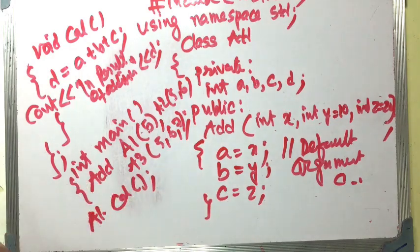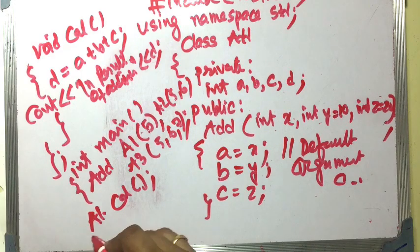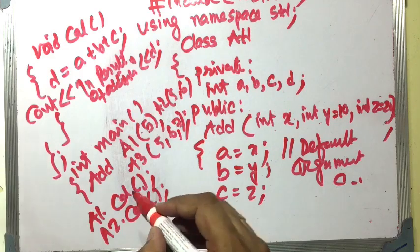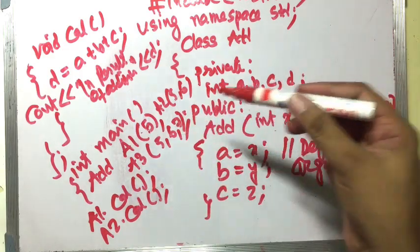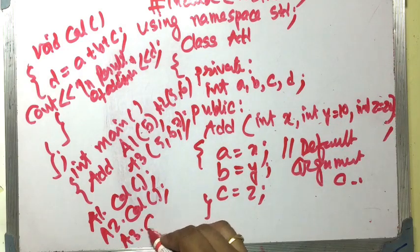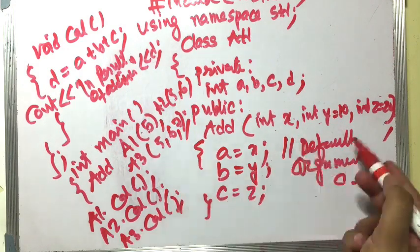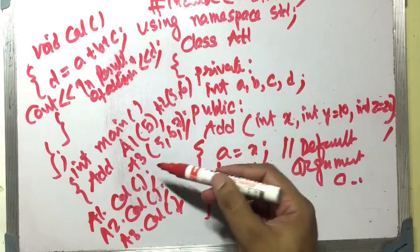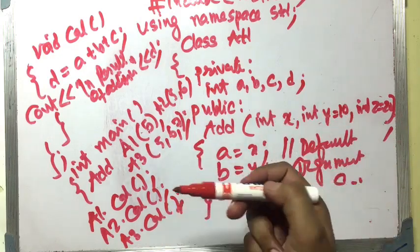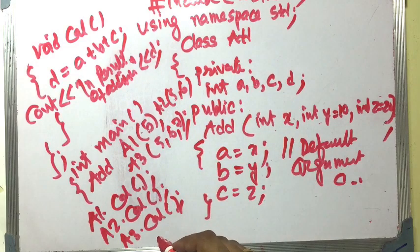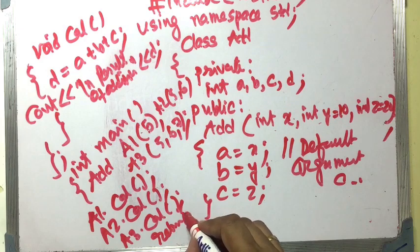When we call a1.calculation(), it displays 5 plus 10 plus 20, which is 35. When we call a2.calculation(), it displays 5 plus 6 plus 20, which is 31. When we call a3.calculation(), all three values are new: x is 5, y is 6, z is 7, so the result is 18.